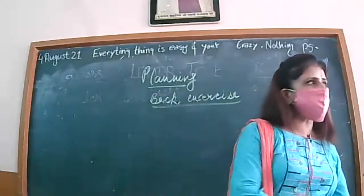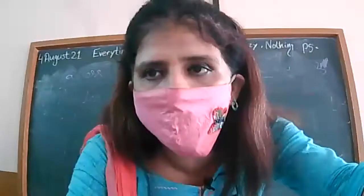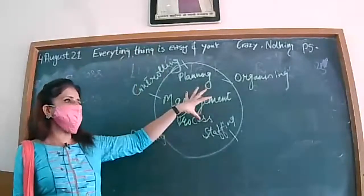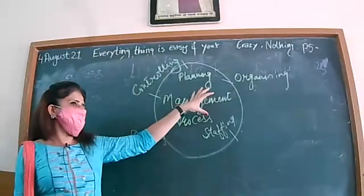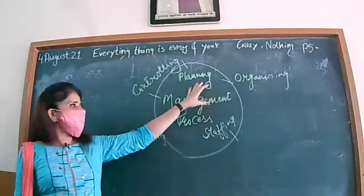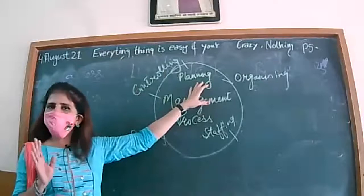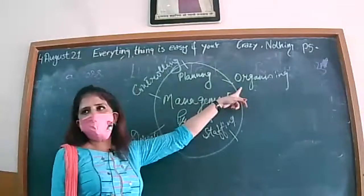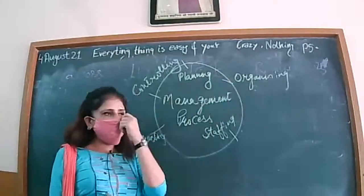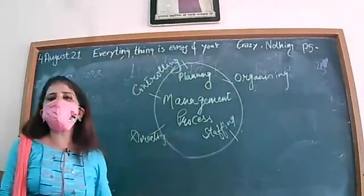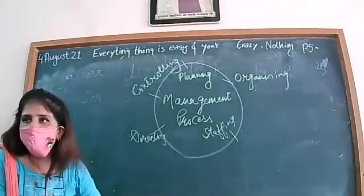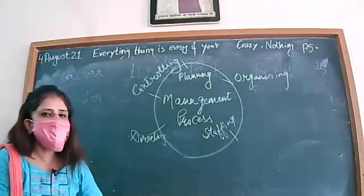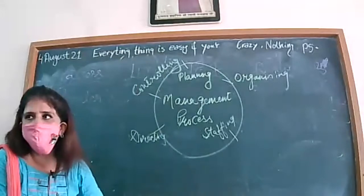Now we come to the next chapter. Our next management function is organizing. This is the management process comprising five different functions. Planning in detail we have discussed. Now what has been planned needs to be organized. Under organizing, we divide duties, fix responsibilities and accountability. In this whole chapter, there will be three key words: duties allocation, responsibility, and accountability.